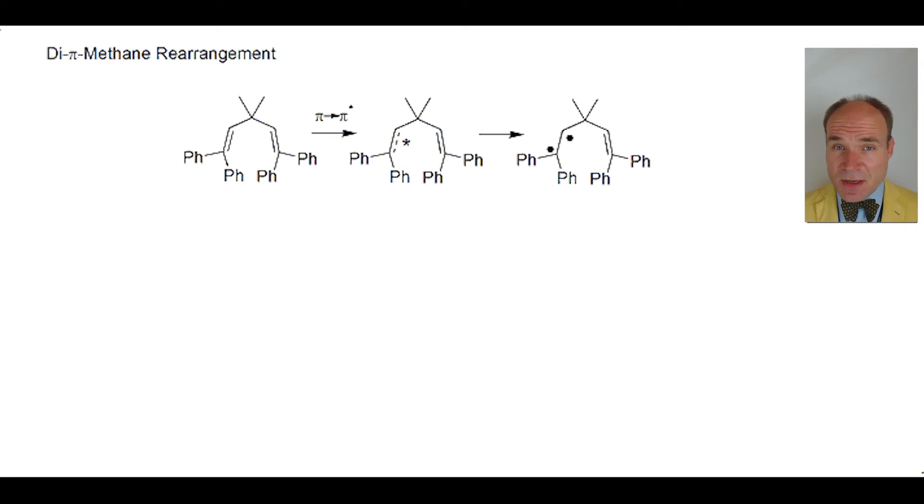The other alkene pi bond is homogeneously broken, with one of the electrons interacting with one of the radicals to generate a cyclopropane, whilst the other electron gives a radical on the other carbon.